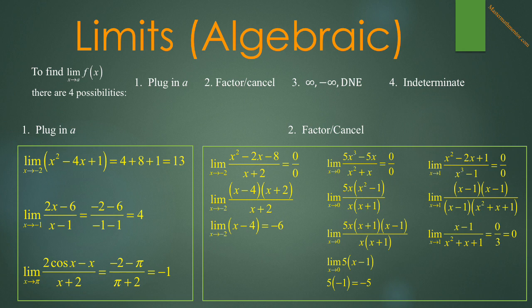To find the limit as x approaches 1 of x squared minus 2x plus 1 over x cubed minus 1, plugging in gives 0 over 0. Both numerator and denominator factor, giving the limit as x approaches 1 of x minus 1 times x minus 1, all over x minus 1 times x squared plus x plus 1. The x minus 1's cancel, leaving the limit as x approaches 1 of x minus 1 over x squared plus x plus 1. Plugging in, the numerator goes to 0 and the denominator goes to 3, so the limit is 0.